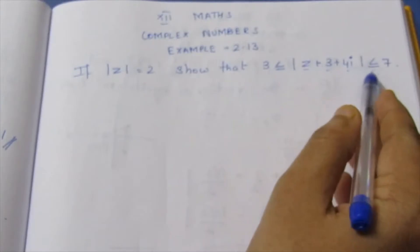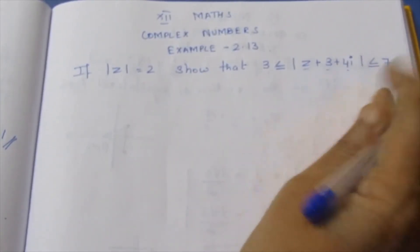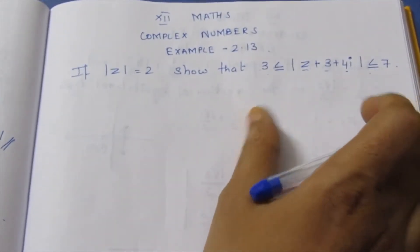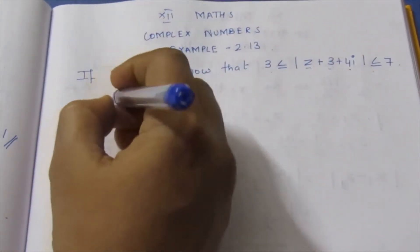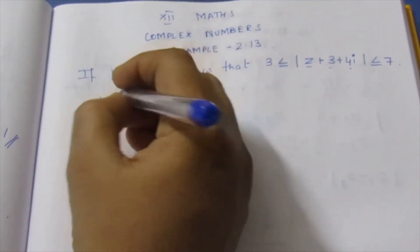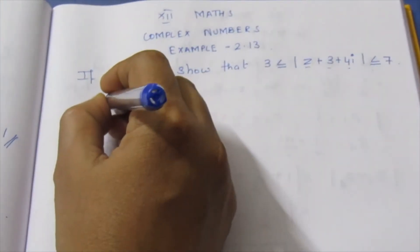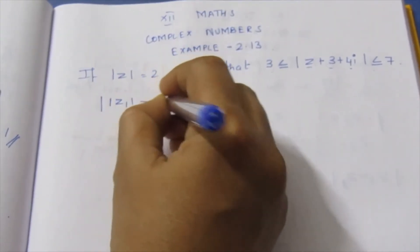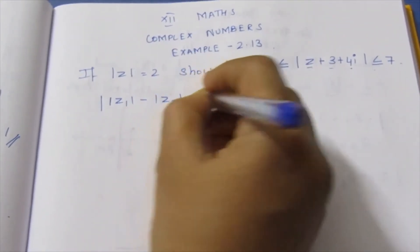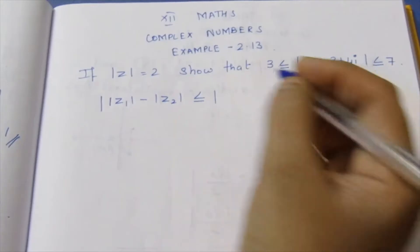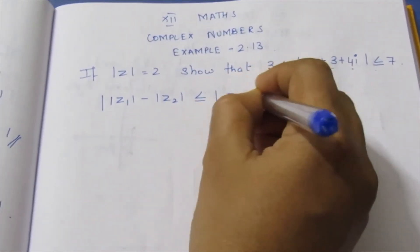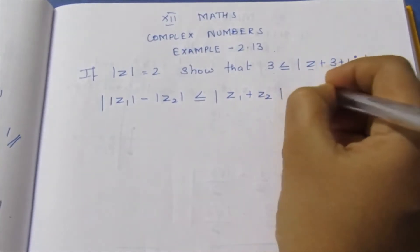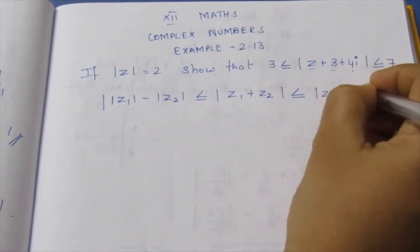This involves a less than or equal to, greater than or equal to related modulus formula. The formula is: modulus Z1 minus modulus Z2 is less than or equal to modulus Z1 plus Z2, which is less than or equal to modulus Z1 plus modulus Z2.